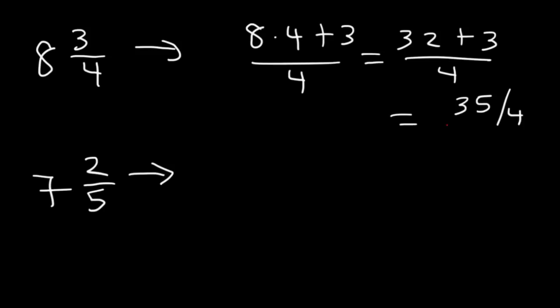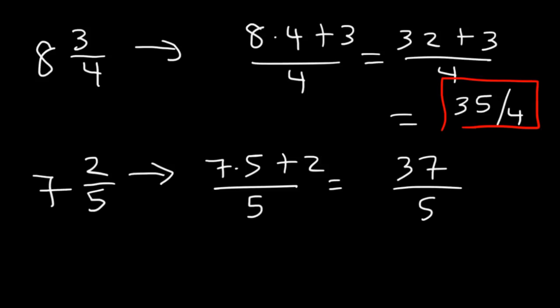That's the answer for the first example. Now, for the second one, it's going to be, we're going to have a 5 on the bottom, and then it's going to be 7 times 5 plus 2. 7 times 5 is 35 plus 2. That's 37. So, the answer is going to be 37 over 5.